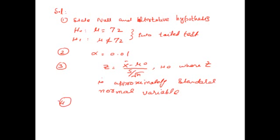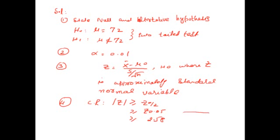In the 4th step we define the critical region. Since this is a two-tail test, alpha is divided by two: 0.01 divided by 2, which is equal to 0.005. The table value for this is 2.58.